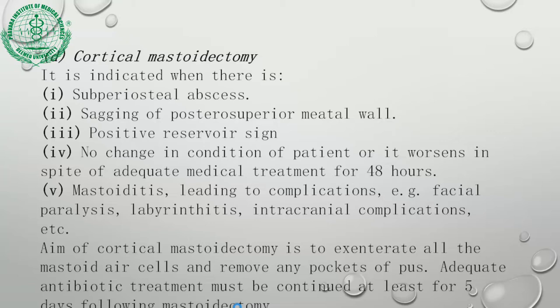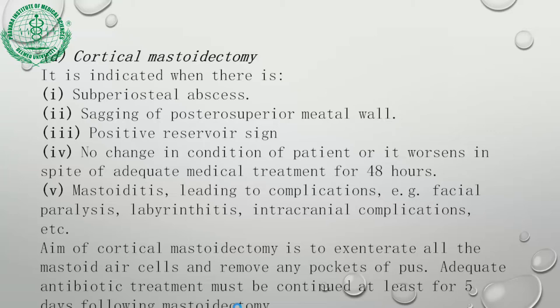Surgical management is cortical mastoidectomy. It is indicated when there is sub-periosteal abscess, sagging of the posterior meatal wall, posterior reservoir sign, no improvement or worsening despite adequate medical treatment for 48 hours, or mastoiditis leading to complications such as facial paralysis, labyrinthitis, or intracranial complications. The aim of cortical mastoidectomy is to exenterate all mastoid cells and remove any pocket of pus. Post-operatively, antibiotics are given for at least 5 to 7 days.